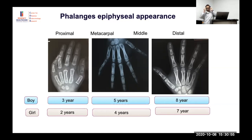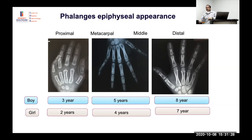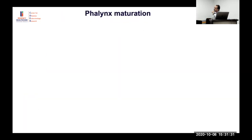To summarize early bone age assessment: if capitate and hamate are present, it is more than three months. If the next carpals are appearing, it is around two years. If only capitate and hamate are there alongside proximal phalangeal epiphyses, it is around two years. Other parameters — especially metaphysis-epiphysis comparison — then become significant.